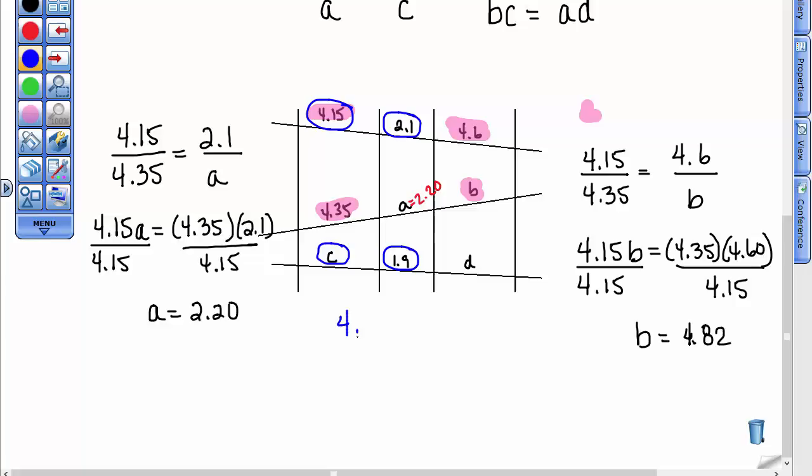We can state that the 4.15 over C, so I'm going here over here, must equal the 2.1 over the 1.9. And if you would set the cross products equal and solve for C, please, you would find out that C is equal to 3.75.